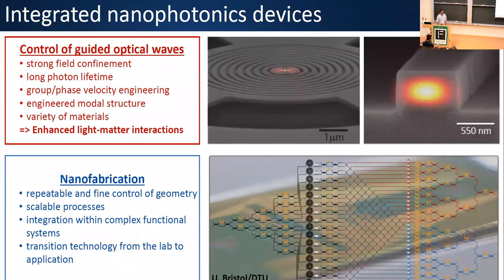The platform we want to use to realize these nonlinear optical functions is based on integrated nanophotonics technology. For us, this means taking advantage of fabrication technology that allows you to pattern the dielectric function of materials at very small length scales. By being able to do that, you can really control the propagation and confinement of light essentially at the wavelength scale. We're also taking advantage of this scalable nanofabrication technology developed for many different applications, giving access to repeatable and fine control of geometries and integration of different functional elements.